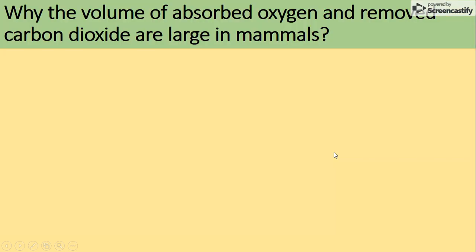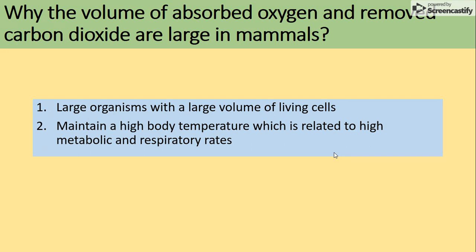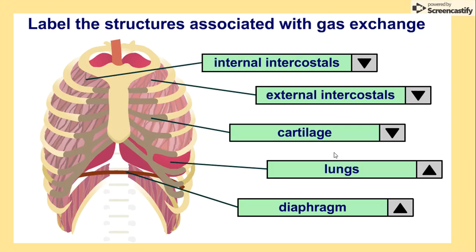Why is the volume of absorbed oxygen and removal of carbon dioxide large in mammals? This is because those organisms have a large volume of living cells and they need to maintain a high body temperature, which is related to a high metabolic rate. This is the structure of gas exchange we will be looking at.